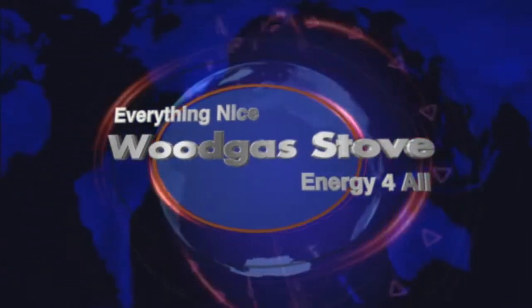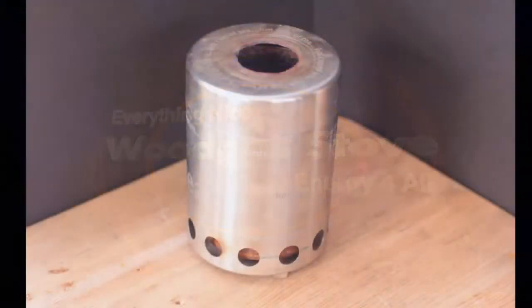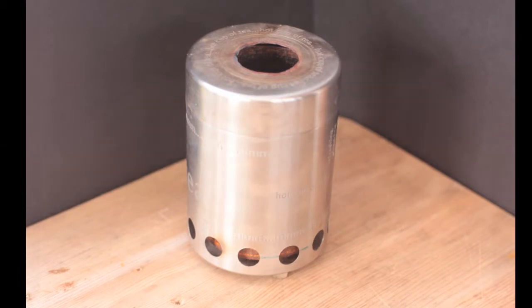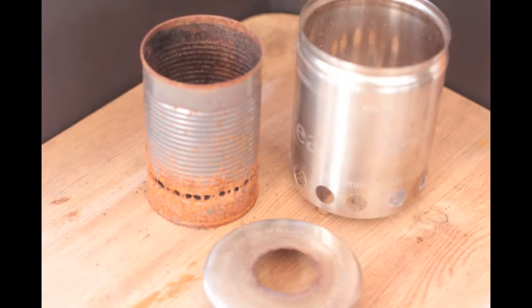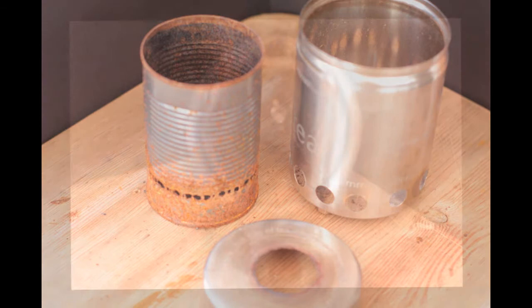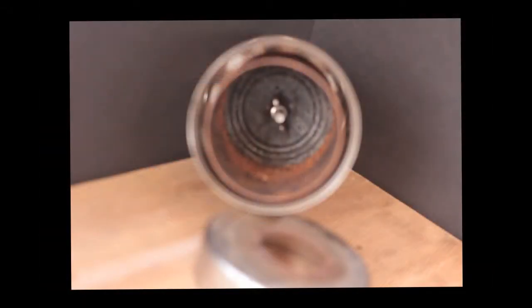Hey, I wanted to take you through a build of the Everything Nice stove, a pretty simple stove using a stainless steel coffee canister and I think I've got a tomato tin, 400 gram or whatever, for the inner. Just holding it together with a bolt and a wingnut, a little spacer holding everything in place there.